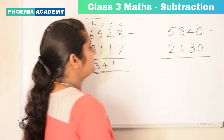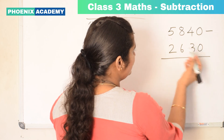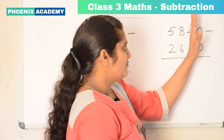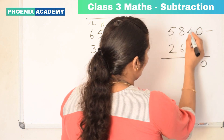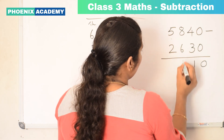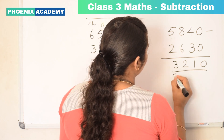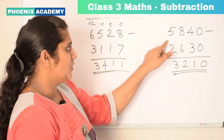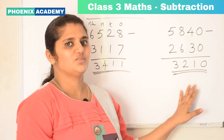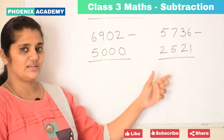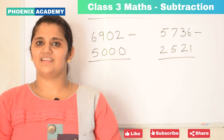Let's subtract this also: 5,840 minus 2,630. So the difference of 5,840 and 2,630 is 3,210. Can you try these 4-digit number subtractions? Thank you for watching. We'll see you in the next class.